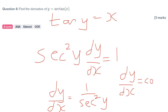And that, guys, is my final answer — cos squared Y, or cos Y all squared — for question number four. That is the end of today's video tutorial looking at implicit differentiation, a very popular and hot topic for your paper two exam for AQA, OCR, and OCR MEI. Thanks for watching, take care, all the best, bye for now.